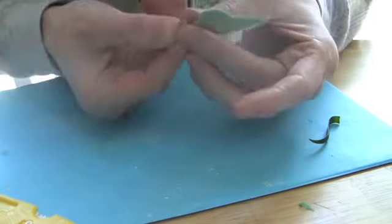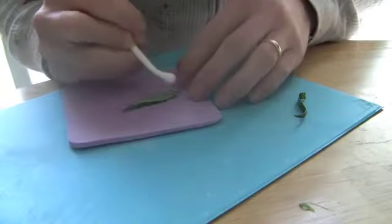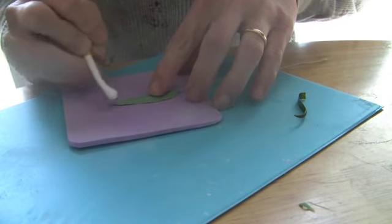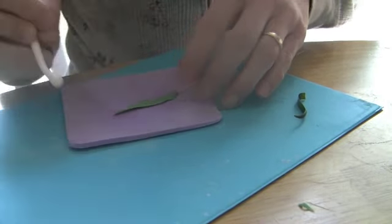Then I'm just going to gently pinch the base of the leaf so that it stays attached and thin it on a piece of shaping foam to make it look more realistic.